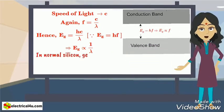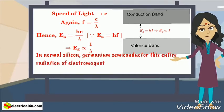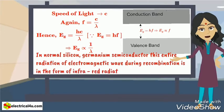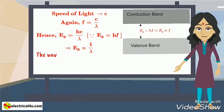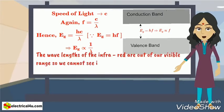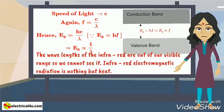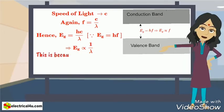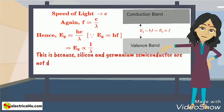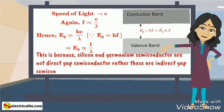In normal silicon, germanium semiconductor, this entire radiation of electromagnetic wave during recombination is in the form of infrared radiation. The wavelengths of the infrared are out of our visible range, so we cannot see it. Infrared electromagnetic radiation is nothing but heat. This is because silicon and germanium semiconductor are not direct gap semiconductors. Rather, these are indirect gap semiconductors.